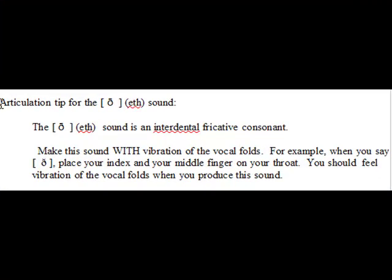Articulation tip for the eth sound. The eth sound is an interdental fricative consonant. Make this sound with vibration of the vocal folds. For example, when you say 'th,' place your index and your middle finger on your throat — you should feel vibration in your vocal folds when you produce this sound. So, let's do it again.